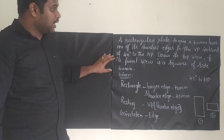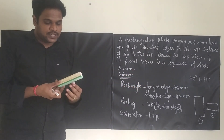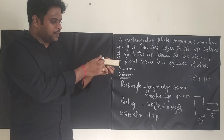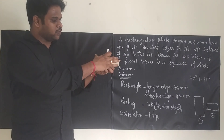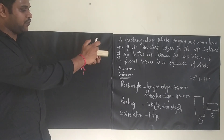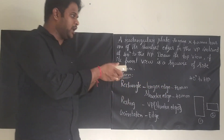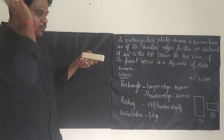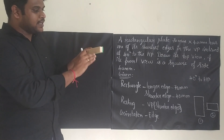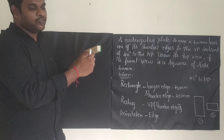Draw the top view. The front view is a square of side 40mm. Just consider this as a rectangle — when you are seeing from the front, the short edge is at the bottom and the long edge is vertical. Short edge will be resting on the BP. When the rectangle is inclined to some angle and you look from the front, you can see a square form.